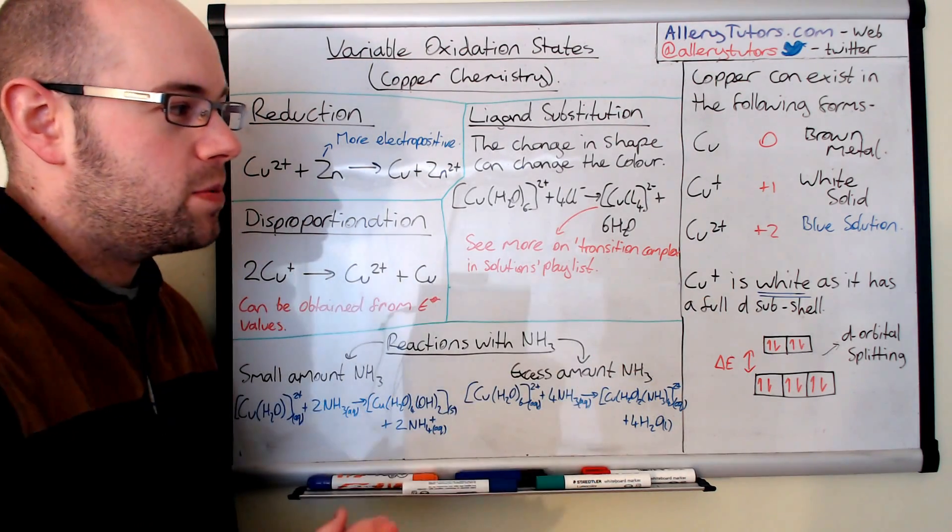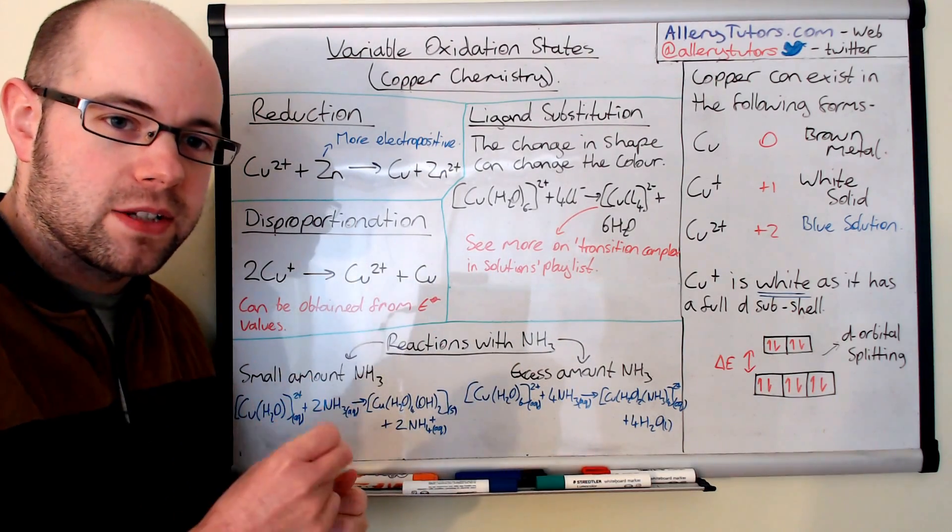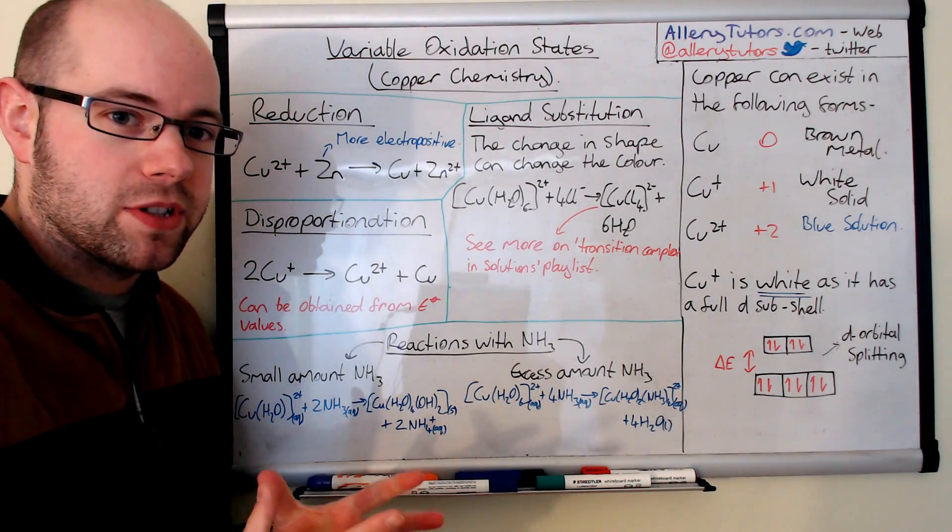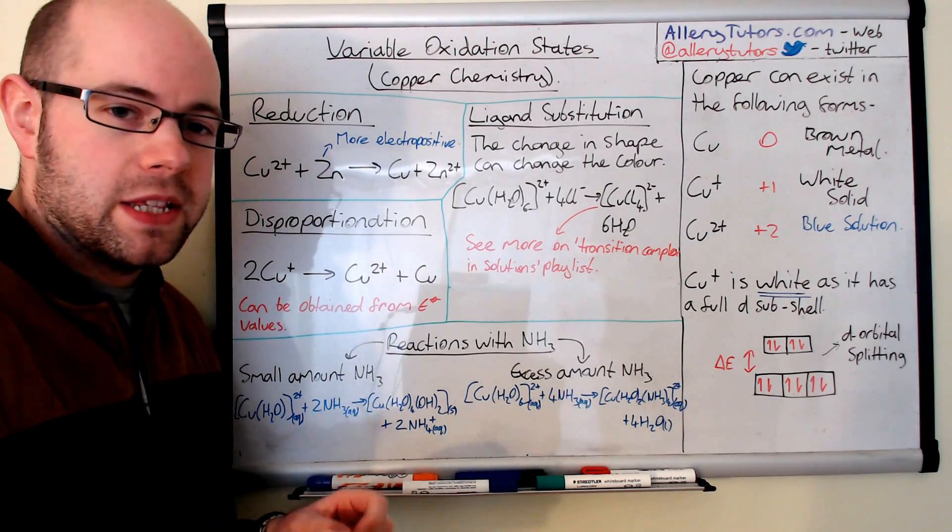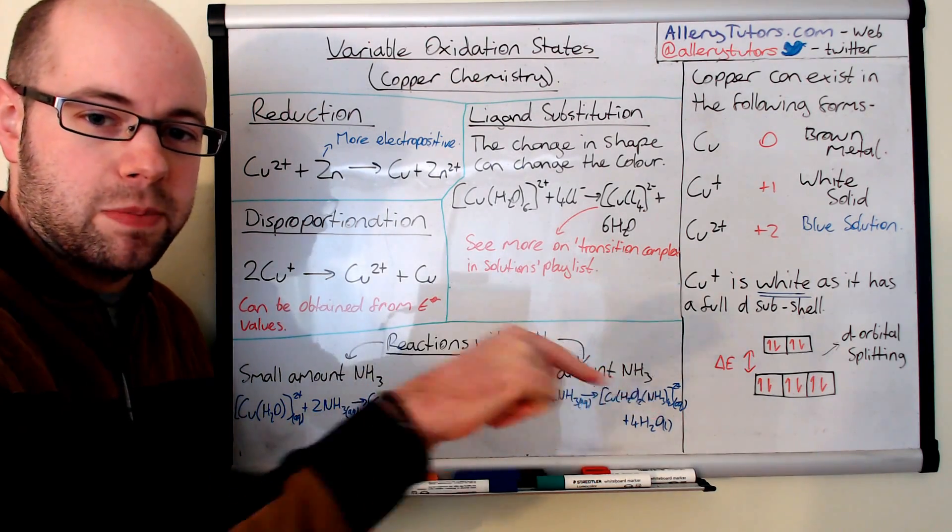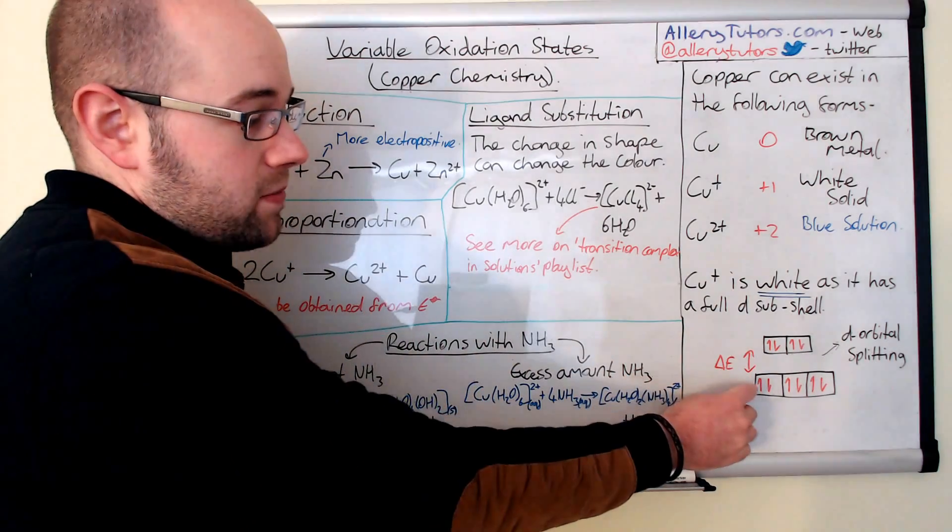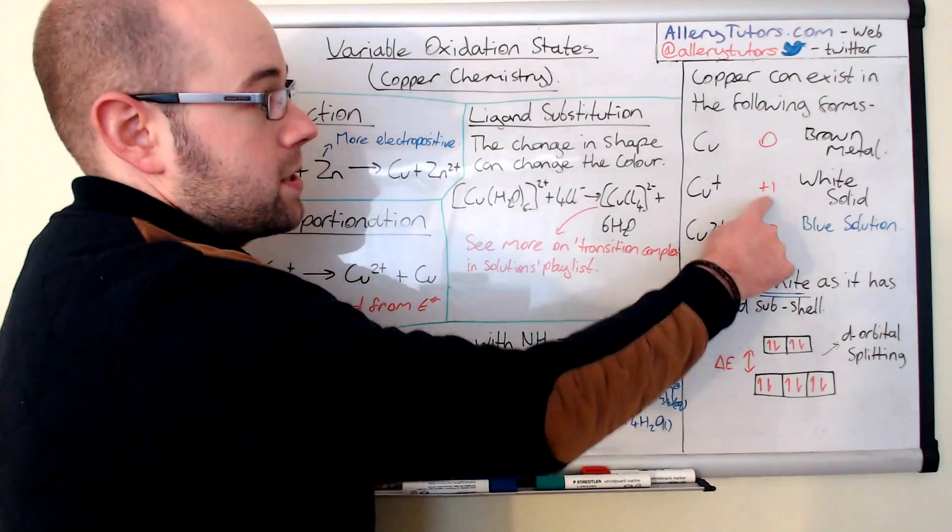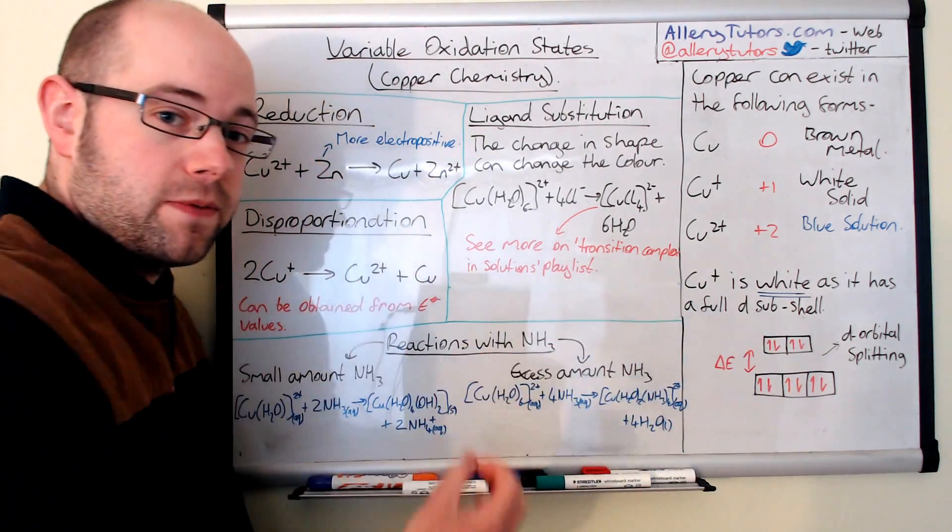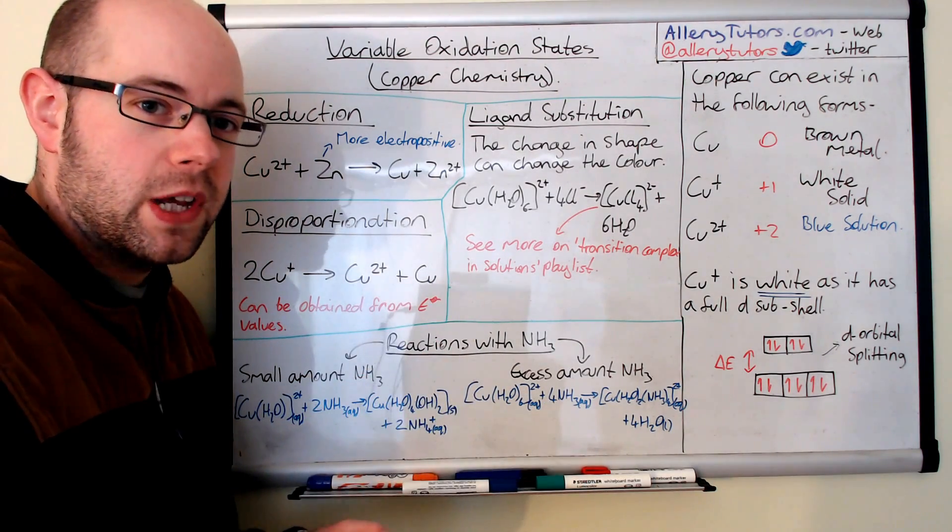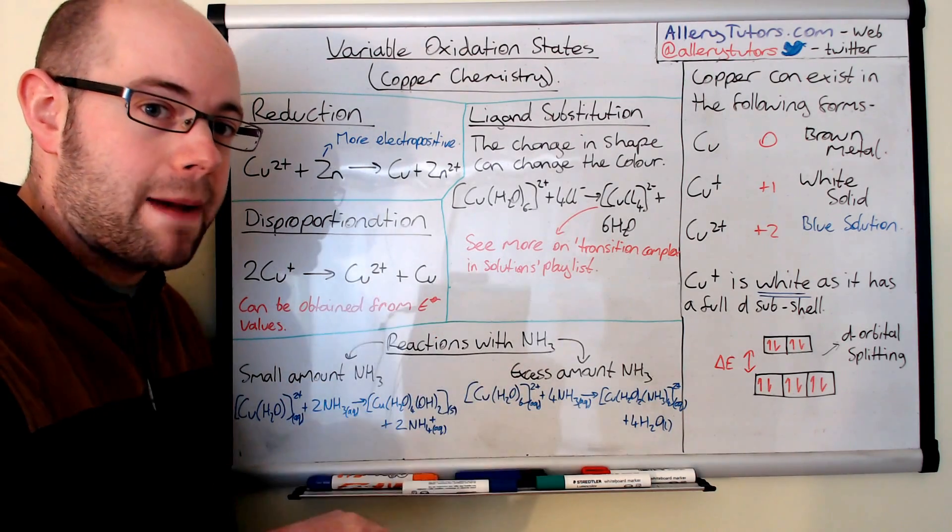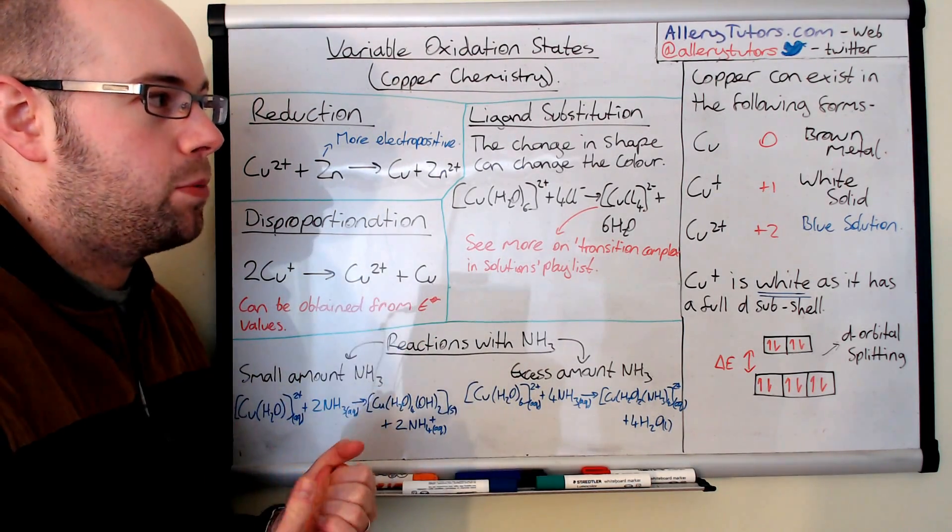We'll just come back to that copper one plus. Now the reason why copper one plus is white is because it has a full D subshell, and I've drawn the electron arrangement down here at the bottom. Now remember, when you have any transition metal compound, when you bond ligands to it, we get this D orbital splitting. Now if you're not sure what I'm talking about with regards to D orbital splitting, there is a video that looks into that. If you just click on the link below, you can have a look at that. But I assume that you know what it means, and effectively you can see here that our D orbital has split and it's completely full.